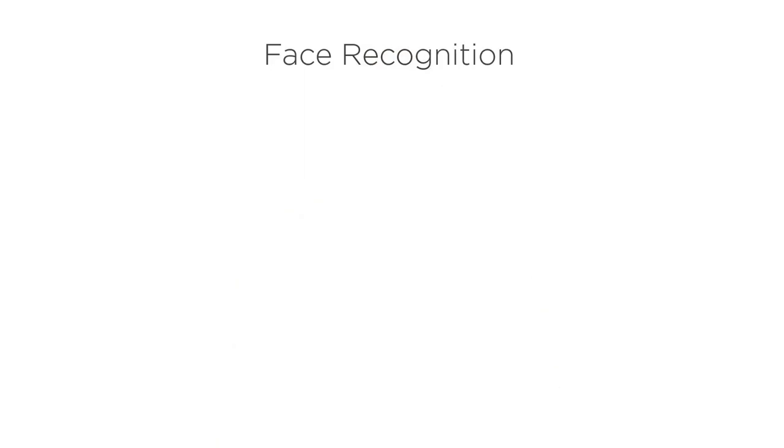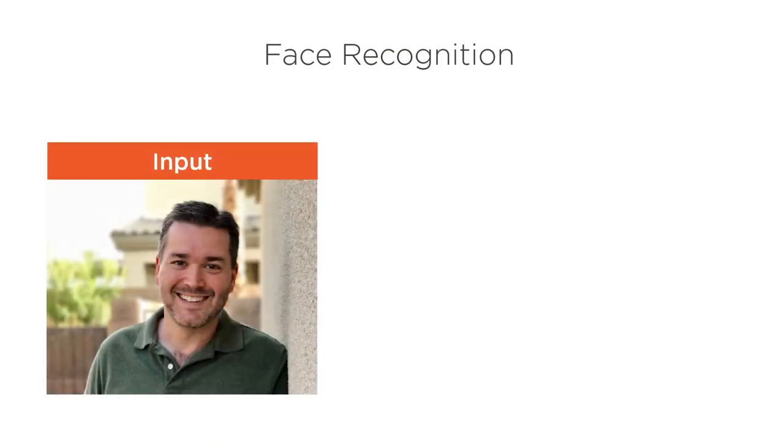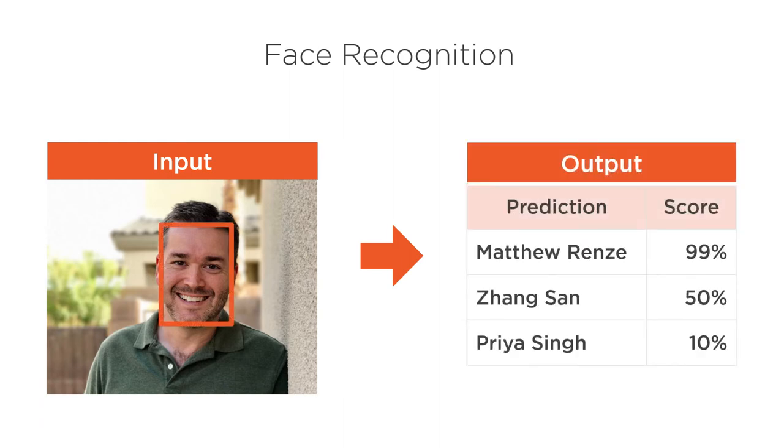For example, we can use face recognition to determine who is contained in our photos. We provide the model with an image as input, then the model produces the identity of the person contained in the image and a confidence score as output.